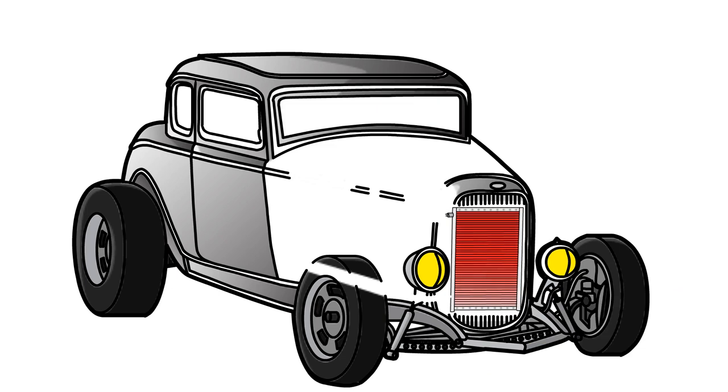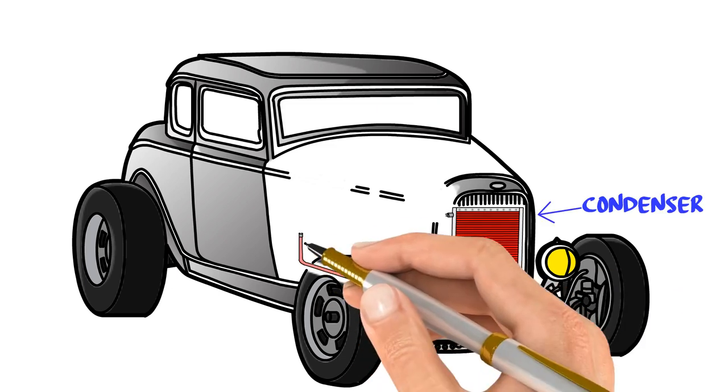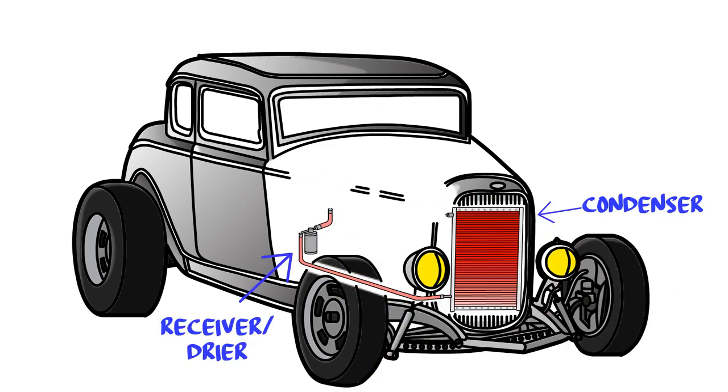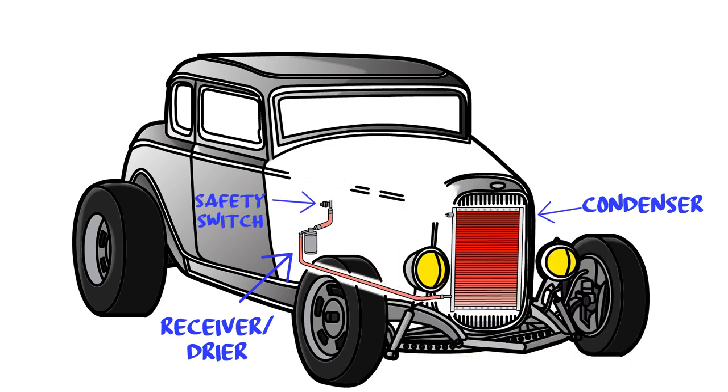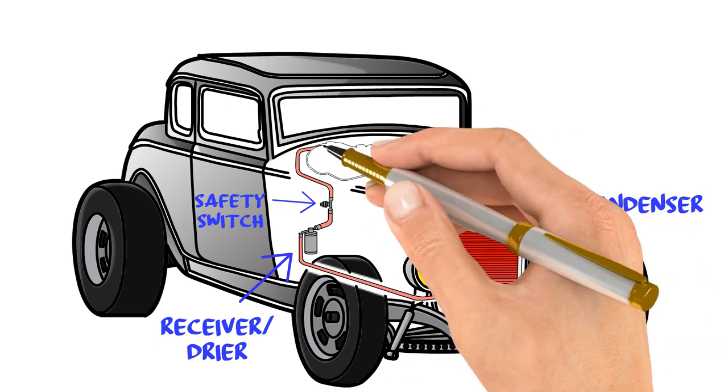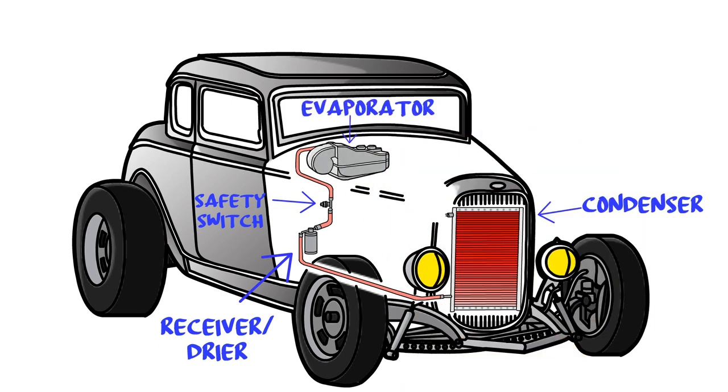From the condenser, we'll move to the receiver dryer. From the receiver dryer, we're going to move to the compressor safety switch, which will either be a binary safety switch or a trinary safety switch. Then we'll move into the expansion valve, which is at the inlet of your evaporator coil. Then the evaporator coil and the evaporator itself, which is inside the vehicle. And then we're going to follow back to the compressor.